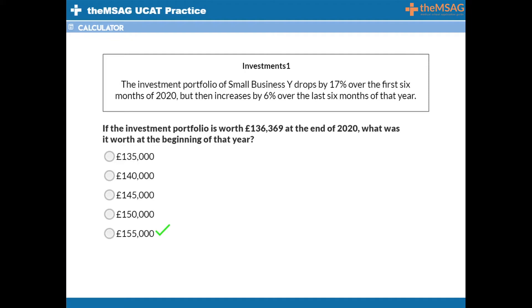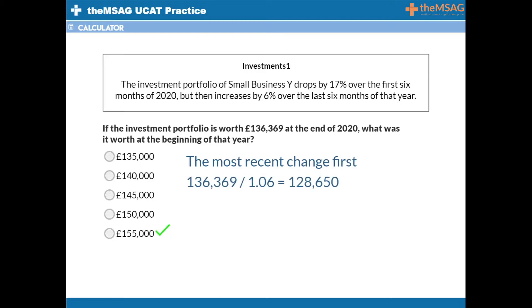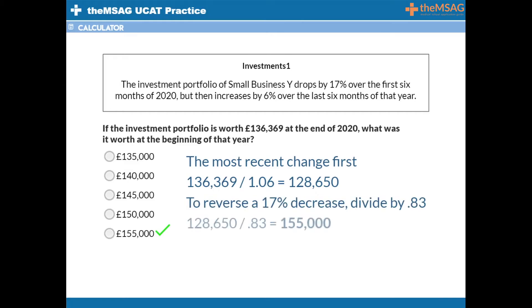You must always reverse the increases and decreases starting with the most recent change first. If an amount has been increased by 6% and is now £136,369, reverse that increase by dividing by 1.06. £136,369 divided by 1.06 gives £128,650 — this is the portfolio's worth before the 6% increase but after the first 17% decrease. To reverse a 17% decrease, remember that you decreased by 17% by multiplying by 0.83, so to reverse this, divide by 0.83. £128,650 divided by 0.83 gives £155,000, the investment portfolio's worth at the beginning of 2020.